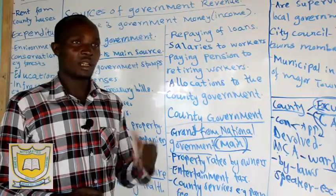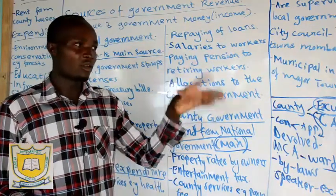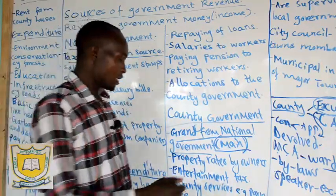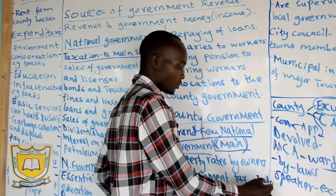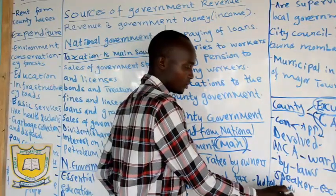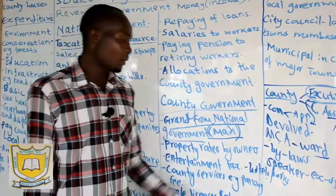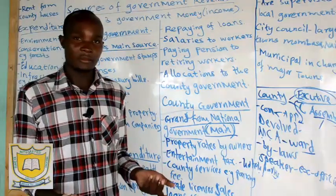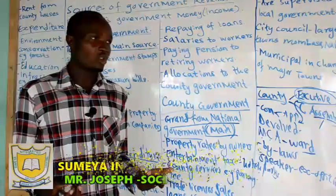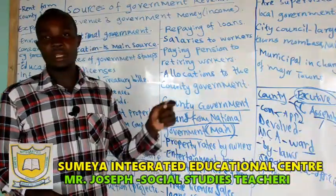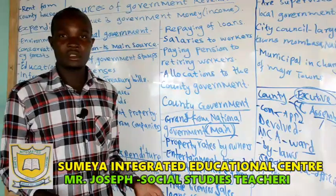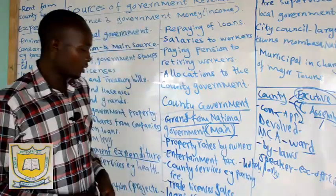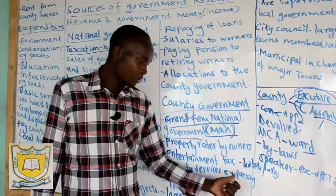Property rates can come from buildings, rental buildings in the county towns, and so on. Then we have entertainment tax, which includes hotels, national parks, concerts by musicians holding events, and clubs where people enjoy themselves — they all pay some entertainment tax to the county government.